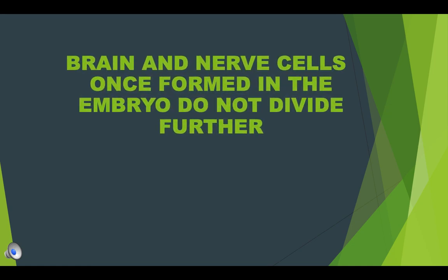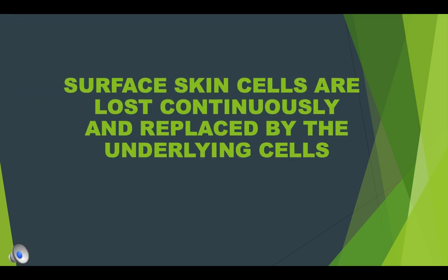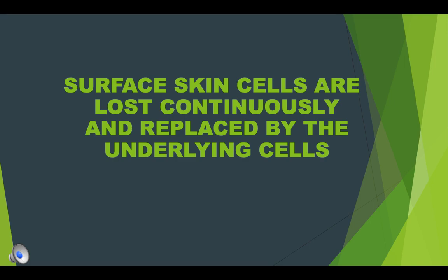Brain and other nerve cells, once formed in the embryo, do not divide further — once dead, they are not replaced. Liver cells may divide only once every one to two years to replace damaged or destroyed cells. Surface skin cells are continuously lost and replaced by underlying cells. A large portion of household dust contains human skin cells; the powdery material that comes off your skin on scratching or hard rubbing while bathing contains these same dead cells.